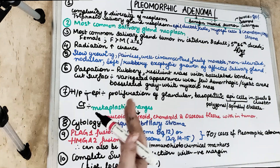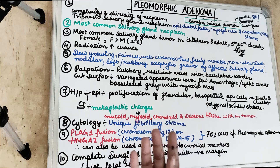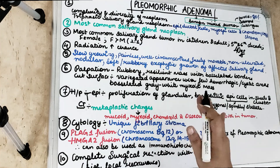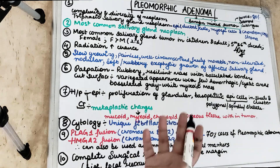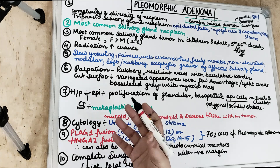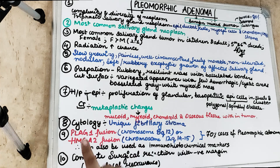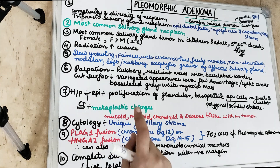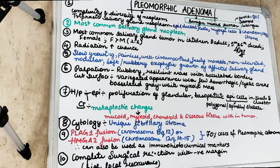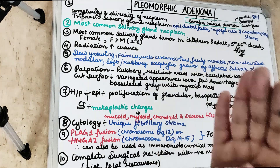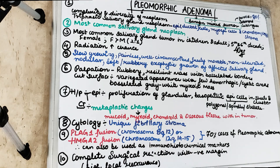The tumor is soft and rubbery and is freely movable — not fixed to underlying tissues. It is a well-circumscribed, lobulated, globular mass surrounded by a capsule. On palpation it is rubbery in consistency, and the mass is resilient with a bosselated surface. If cut, the cut surface shows a variegated appearance with some hemorrhagic or cystic areas.